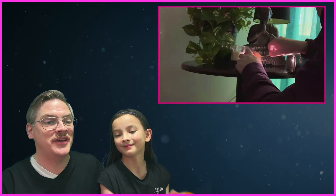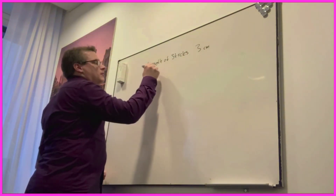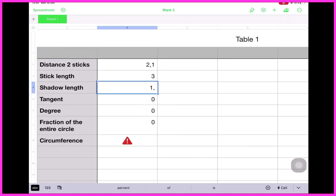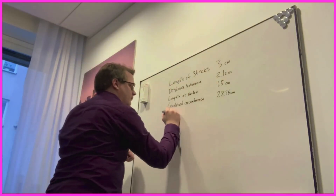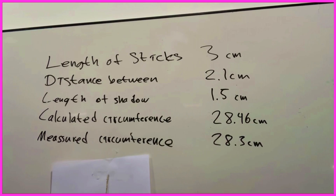Let's have a look at one of our first videos we ever made. I used toothpicks and put them into an orange, measured the toothpicks and the length of the shadow that the top one gave. Hence I could calculate the circumference of the orange and then compare it to the actual circumference. It turns out I was spot on with my calculations — this is a copy of the famous experiment that Eratosthenes did back in the day, proving that the earth was round.